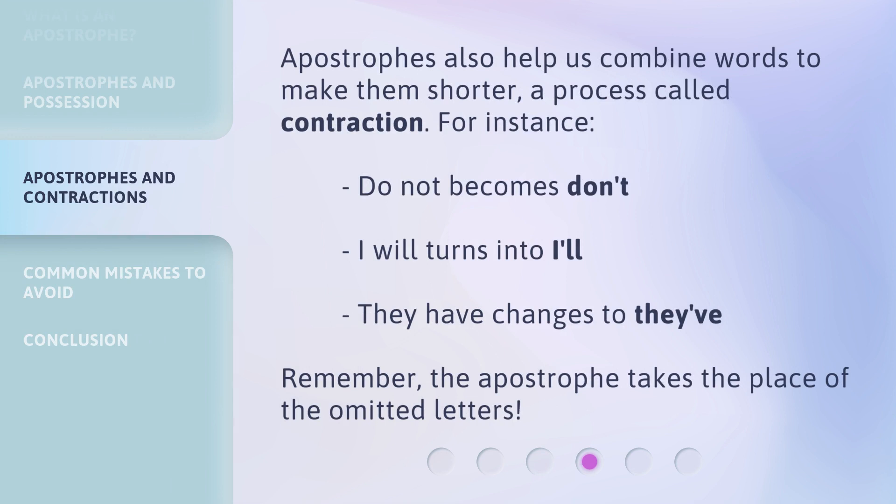Apostrophes also help us combine words to make them shorter, a process called contraction. For instance, 'do not' becomes 'don't,' 'I will' turns into 'I'll,' and 'they have' changes to 'they've.' Remember, the apostrophe takes the place of the omitted letters.